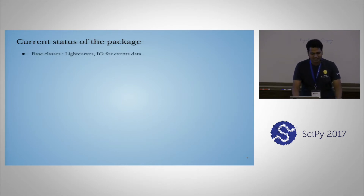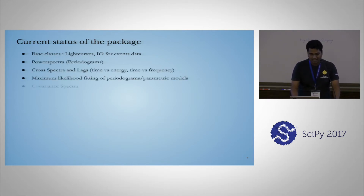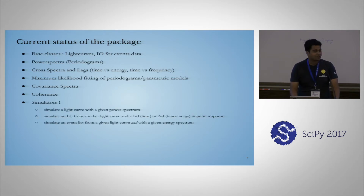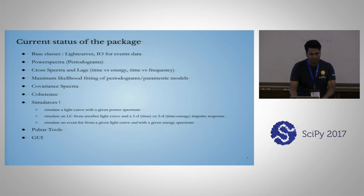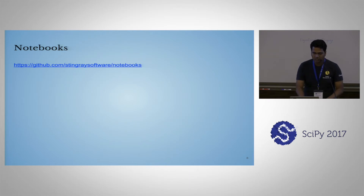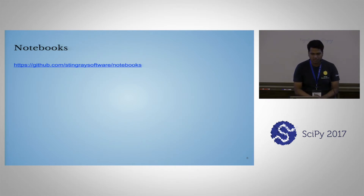So, Stingray — how about it? We have our base classes, we have light curves and methods to do input-output for the events data. We have power spectra, cross spectra, lags, pretty much a lot of things, simulators — and that wasn't there a year ago, so I'll tell you how it got there. We also have pulsar tools and a miniature GUI. We document our methods in notebooks, which I would like to show you.